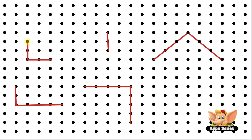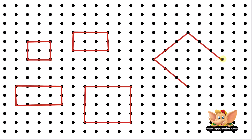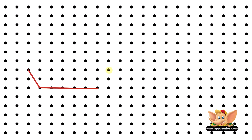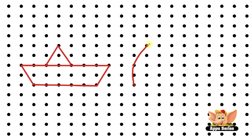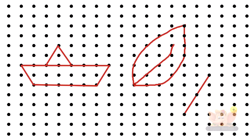Alright, now let's try something else. Let's complete these figures to make squares and rectangles. Let's try and draw simple objects on this grid. Here I'm drawing a boat. Now here we can draw a leaf, this way. How about drawing a star now?